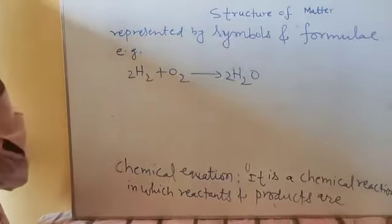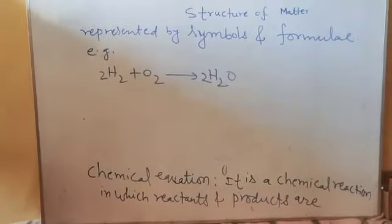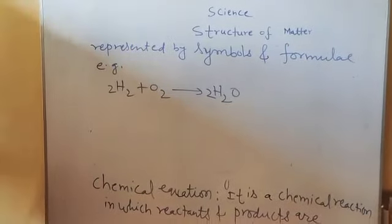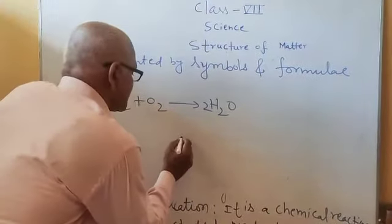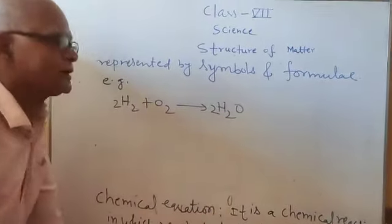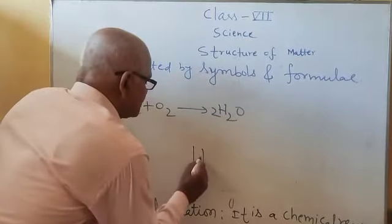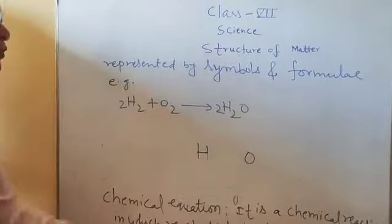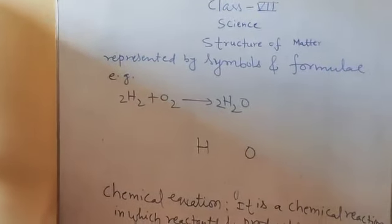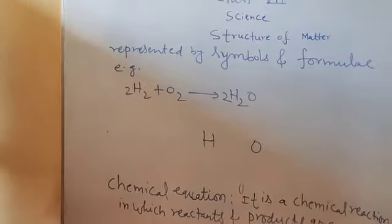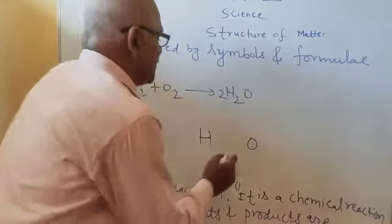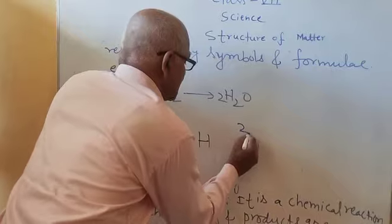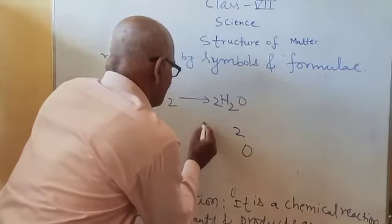For the formation of a formula, write down first the elements present in that compound. For example, water. In case of water, hydrogen and oxygen. These two elements take part to form water. You know that the valency of oxygen is 2 and the valency of hydrogen is 1.